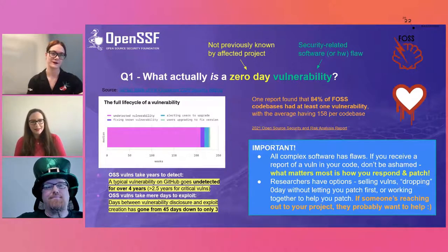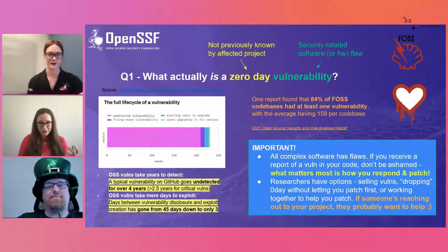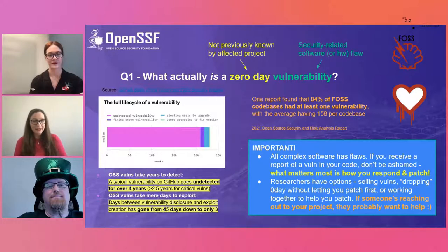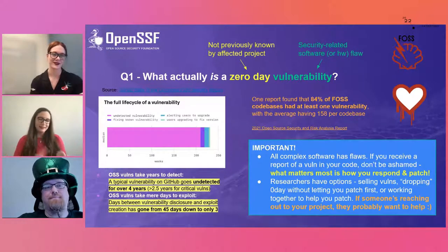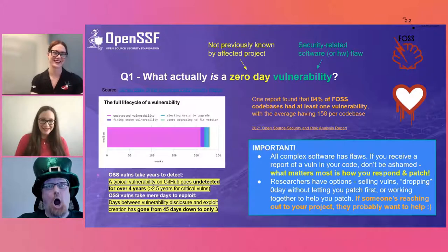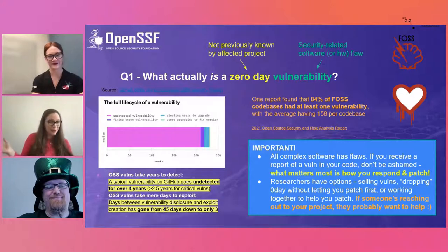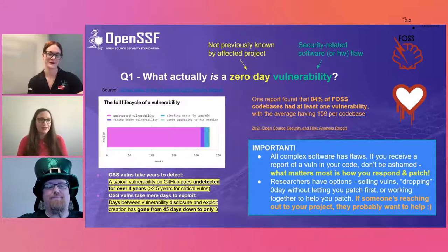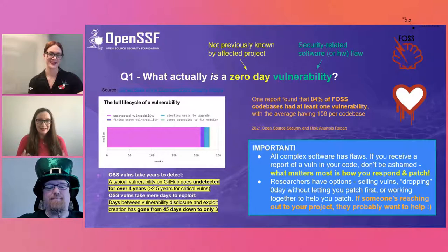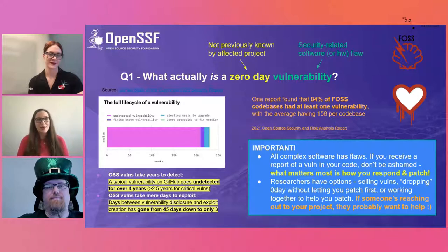This interaction is a little bit asymmetric and biased toward the researcher — they have a little more power. Researchers have options: they could sell a zero-day for a million dollars on dark marketplaces, drop it on the internet, use it to write malware, or they could reach out and help you write a patch. If a researcher is approaching you, they probably do want to work together and help educate you.